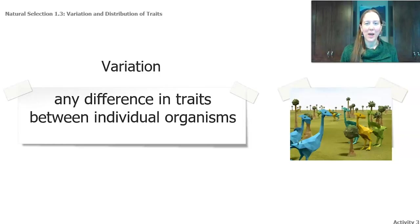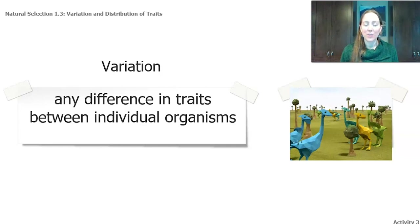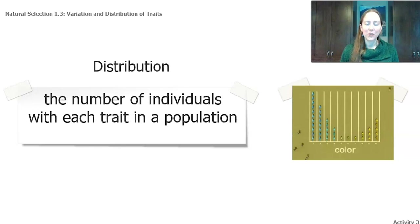That video helped add to your understanding of three important words: variation, distribution, and histogram. Variation is any difference in traits between individual organisms. You saw lots of variation in the ostrilopes — different colors, different neck lengths — all those things are differences in their traits. Distribution is the number of individuals with each trait in a population.